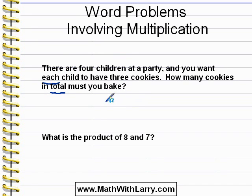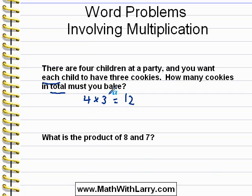That just takes practice to recognize. So in this problem, what we actually want to do is four times three, which is twelve. We could get that answer either by knowing our multiplication facts, or by using a multiplication table, or by remembering that multiplication is repeated addition, which means we could do three plus three plus three plus three, which equals twelve, giving three cookies to each of the four children. But after all is said and done, the fastest way to solve this problem is with multiplication.